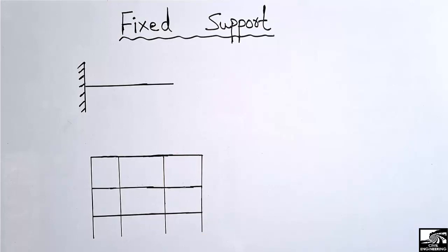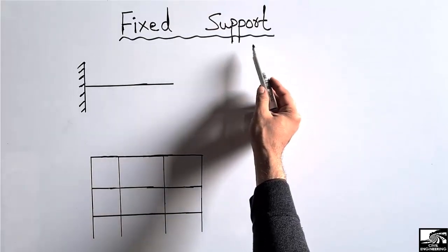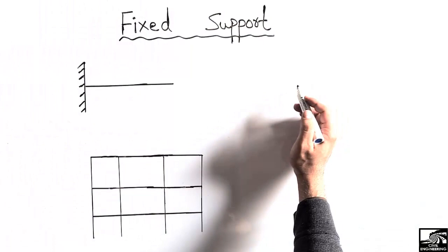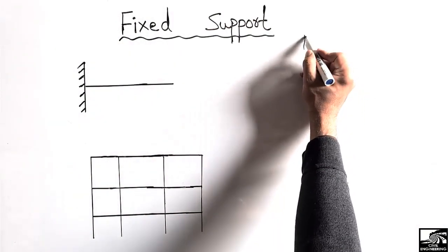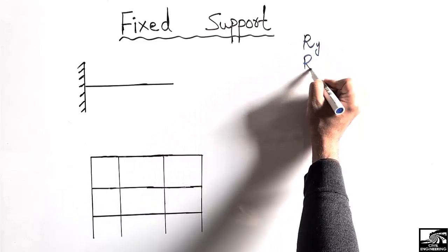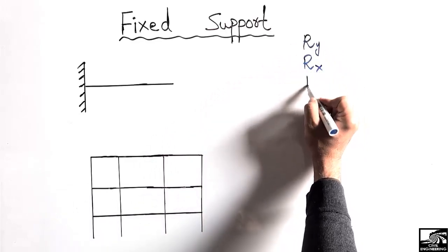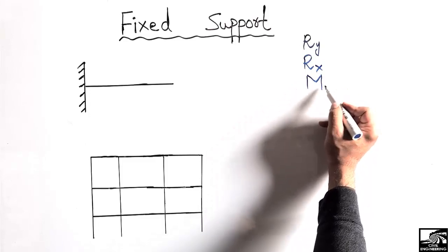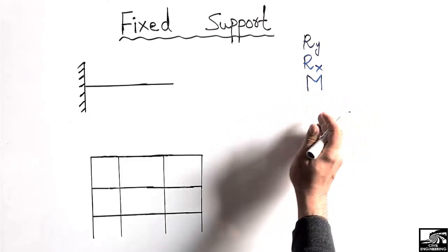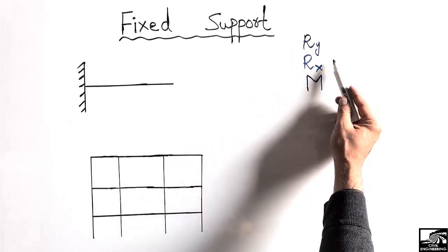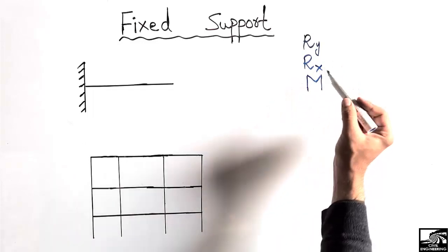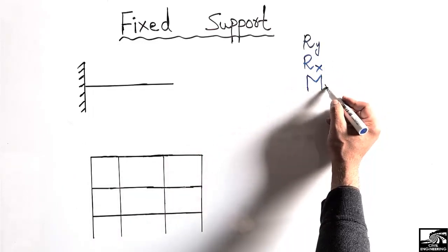Welcome back to DC1 Engineering YouTube channel. Today our lecture is about where we use fixed support practically. Fixed support has three main resistances: it can provide vertical resistance to the applied load, it can also provide horizontal resistance, and it can also take the moment. Due to the moment resistance, it is called a fixed support, while roller and hinge supports can only take horizontal and vertical forces.